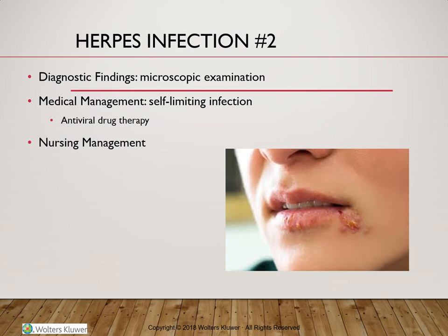In terms of medical management, despite the fact that it is a self-limiting infection, we do need to intervene during attacks with therapy. Both types of the virus respond well to antiviral drugs such as acyclovir (Zovirax) or famciclovir (Famvir). The client will be prescribed oral antiviral medication for three to five days to shorten the duration of the attack, or they can be prescribed continuously as suppressive therapy to prevent the frequency of outbreaks or decrease the potential for transmission to others.